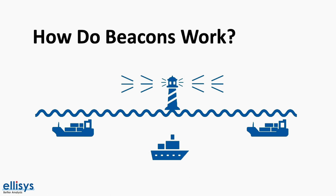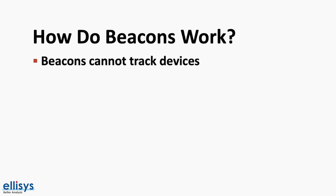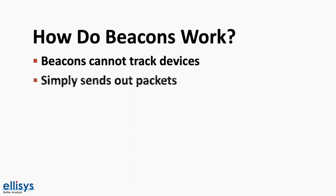The concept of beacons originates from the simple lighthouse application in the real world. Lighthouses send out light signals in order for ships to discover them and be able to tell where their location is. In a similar fashion, a Bluetooth beacon sends out advertising packets for other devices to discover it. A common misconception and myth with beacons is that they're able to track users and mobile devices. Beacons cannot track devices in general because all they do is send out advertising packets that allow other devices to discover them.